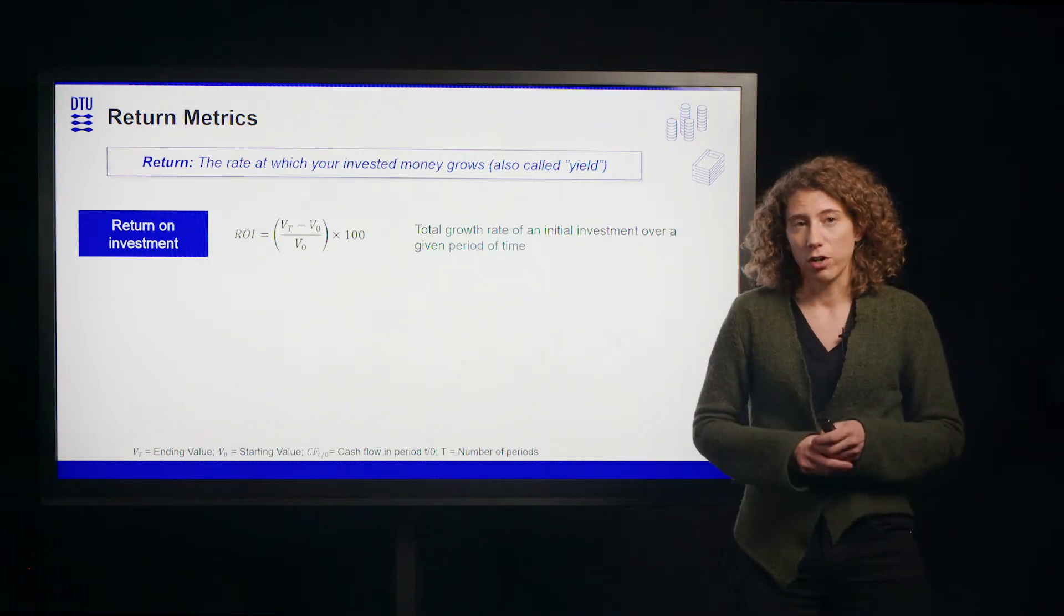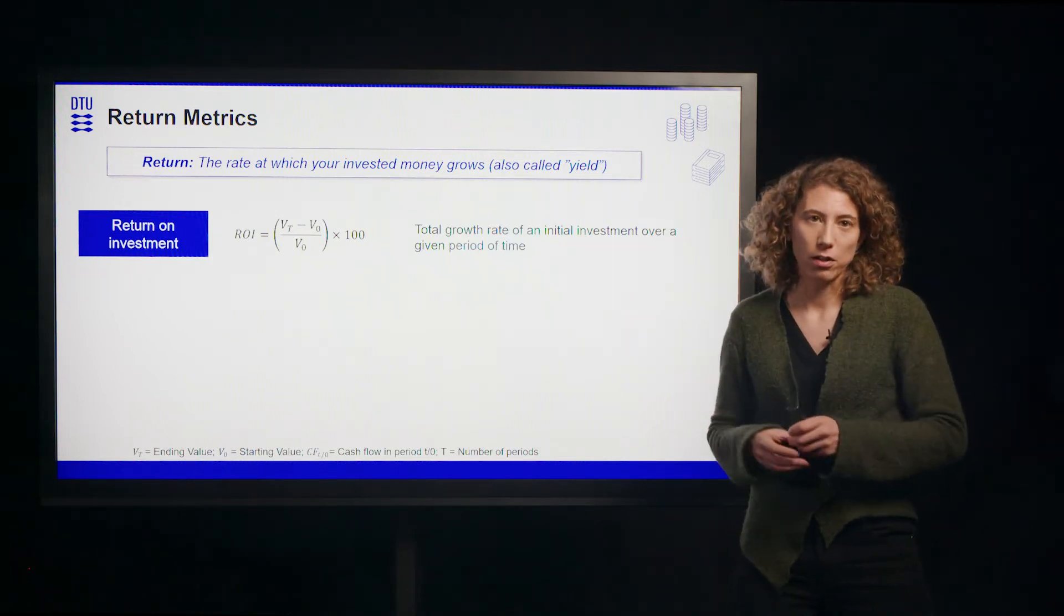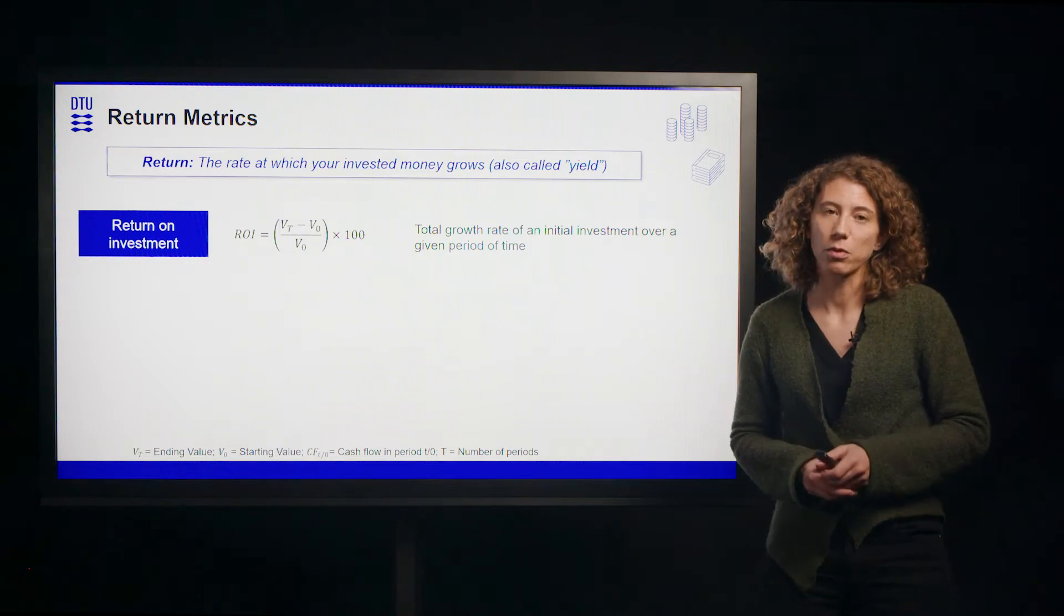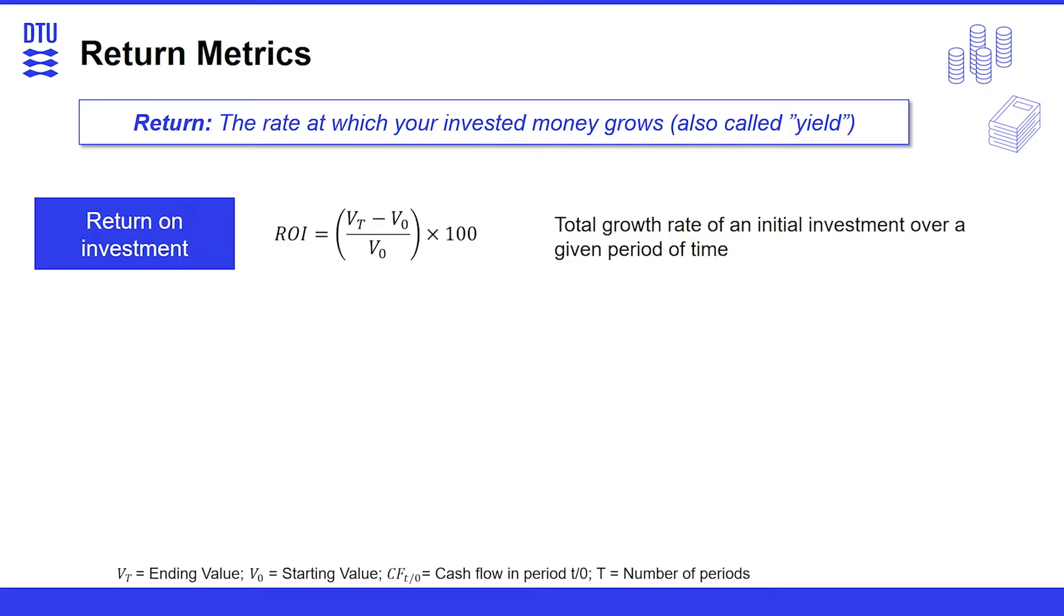The simplest return metric is the return on investment ROI. And here we are simply looking into the value in the beginning of a project versus the value in the end of a project. And then we can see how much that has changed. This is the total growth rate of an initial investment over a given period of time.